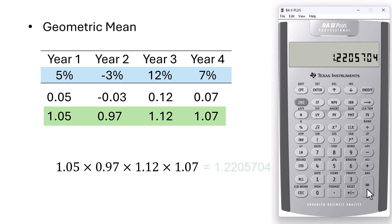Next we raise this product to the power of 1 over n, n being 4 in this case. So press the y to the power of x button. Since 1 over 4 equals 0.25, we can simply enter 0.25 at this point.